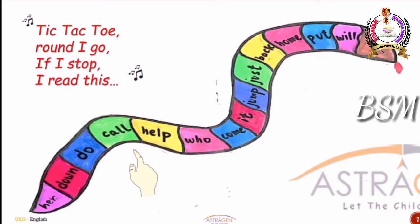Suppose your finger stops on the word 'will' — scream out the word and say: I will finish my work on time. Suppose your word is 'put': Put back the chair in its place. Suppose your word is 'home': Come home quickly. Suppose your finger stops on 'back': Don't look back. The word 'just': Just do it. Suppose your finger stops at 'jump': Don't jump on the bed. Suppose your finger stops on 'it': It is a big snake. Suppose your finger stops on 'come': Come to school on time.